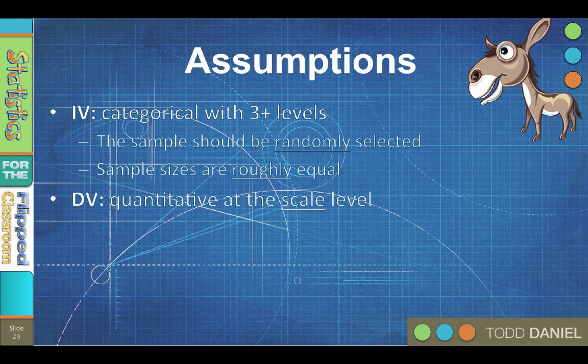The dependent variable must be quantitative at the scale level, so that's interval or ratio. Now some people will tell you that if you use Likert survey scales, like 1 equals strongly disagree up to 5 equals strongly agree, that those data are ordinal and you have to use non-parametric statistics.